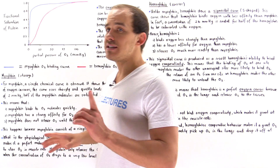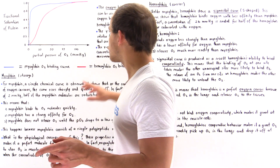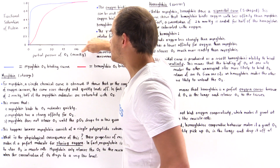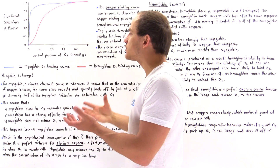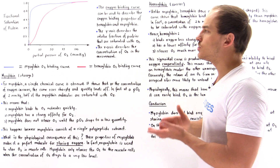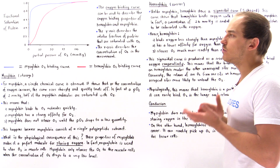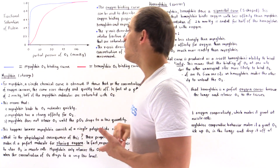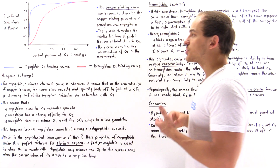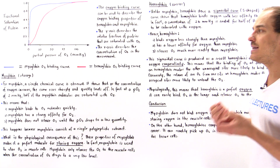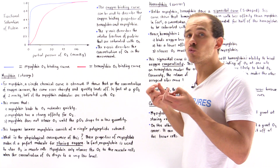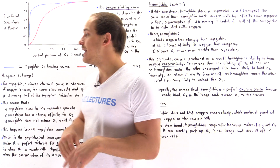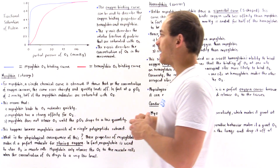A value of 100 mmHg describes the partial pressure of oxygen inside our lungs, while a value of 40 mmHg describes the partial pressure inside our resting tissue. We'll discuss much more of that in the next lecture.